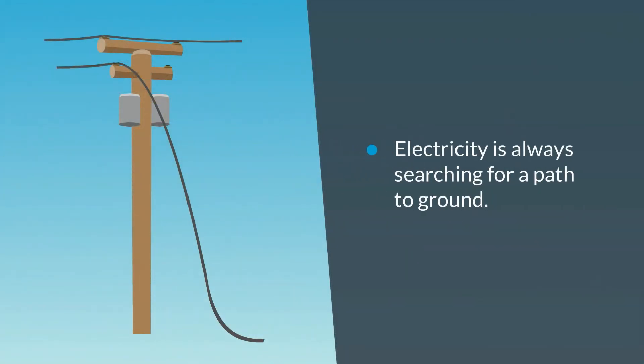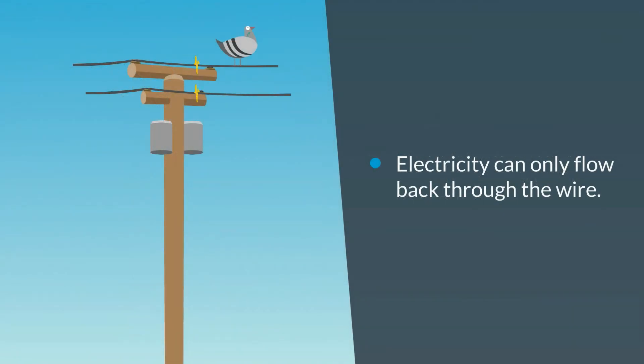Electricity is always searching for a path to ground. A bird on a wire doesn't give electricity anywhere to go except back through the wire, so it is easier for current to continue on its way.